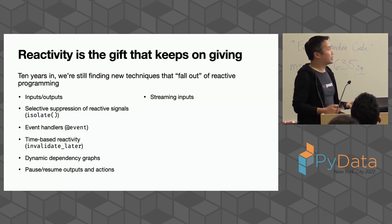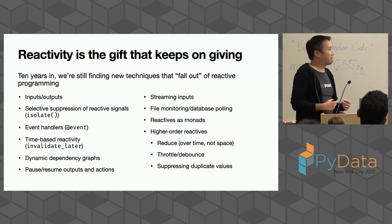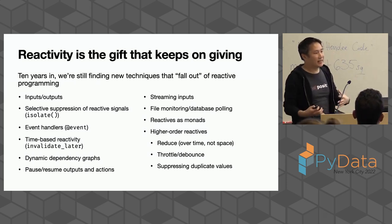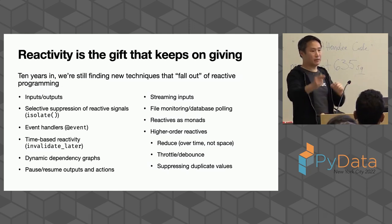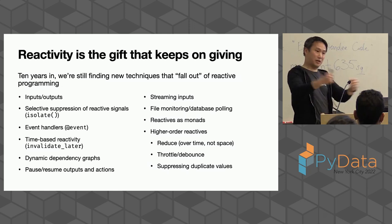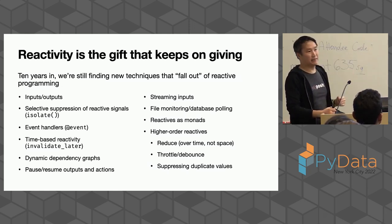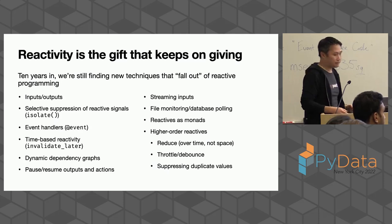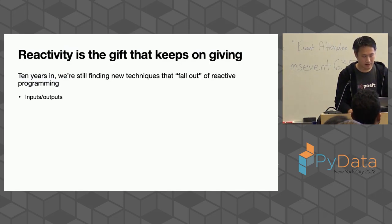It turns out this reactive programming model is so beautifully well-suited to the task of creating interactive applications that for 10 years we've just been constantly discovering new features falling out of the primitives we wrote back in 2012. These are features that felt like we discovered properties of reactivity just by experimenting — like grabbing subatomic particles and seeing what nice things happen. And then boom — we have event cameras, time-based reactivity, and more.